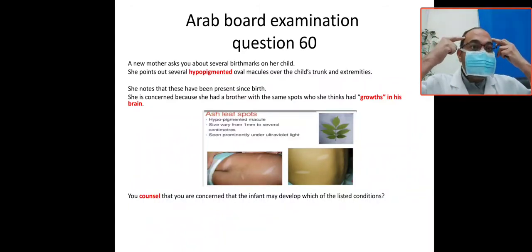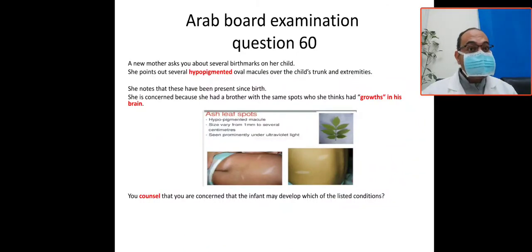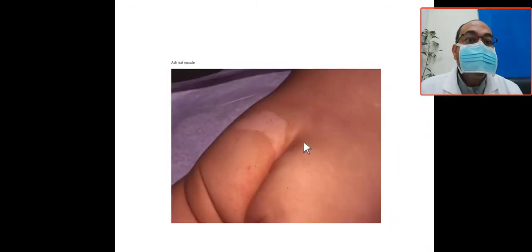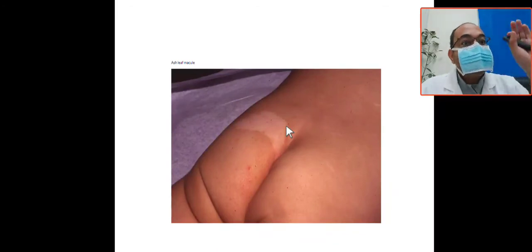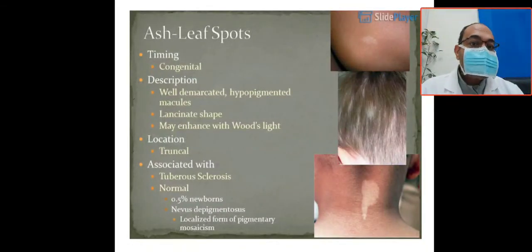Tuberous sclerosis is a phakomatosis, meaning a neuro-oculo-cutaneous lesion syndrome, also called a visceral syndrome. It affects the CNS with tubercles, causes retinal astrocytomas, cardiac rhabdomyomas, and visceral involvement including renal angiomyolipomas. The ash leaf spot itself is a well-demarcated hypopigmented area, millimeters to centimeters in size, located on the trunk or extremities, present congenitally since birth.